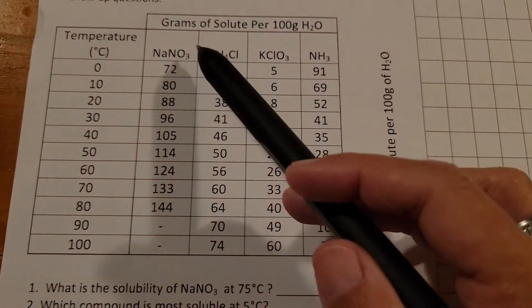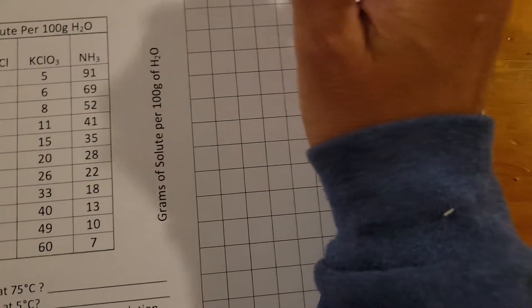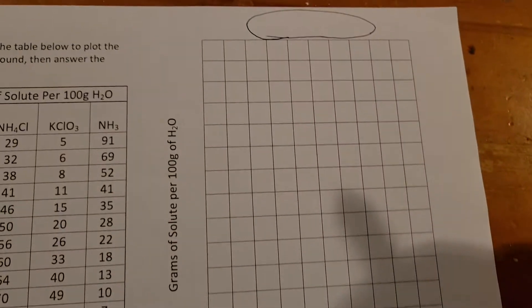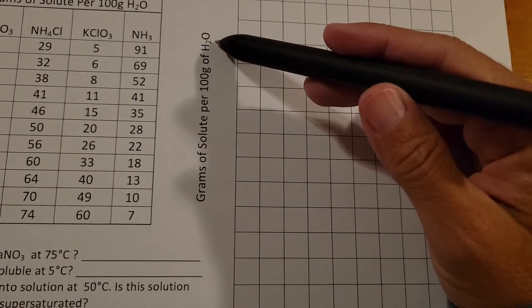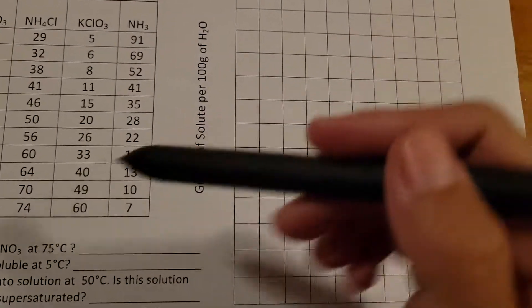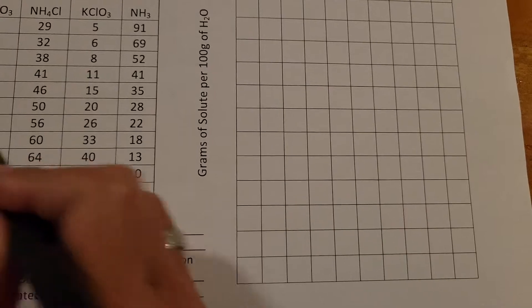When you're going to come over here to your graph, make sure that you give it a title. Up the side is the grams of solute per 100 grams of water. You can see that the highest value is 144.